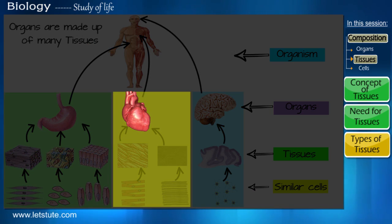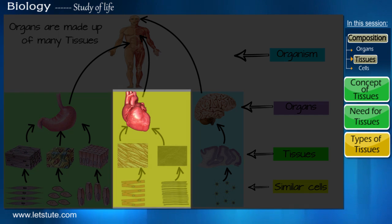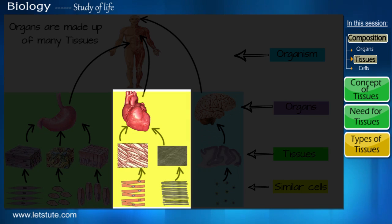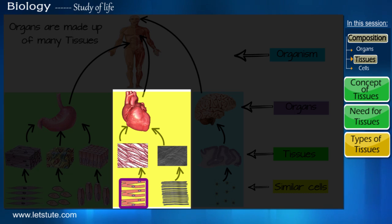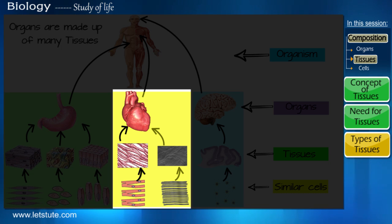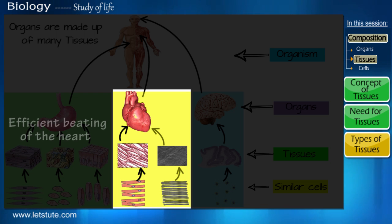The heart, for example, is an organ made up of two different types of tissues. One type of tissue has similar cells which come together to perform a common function, which is the efficient beating of the heart.